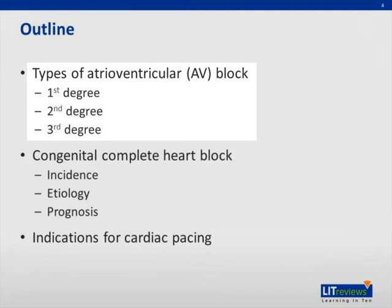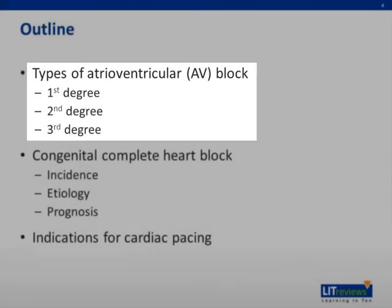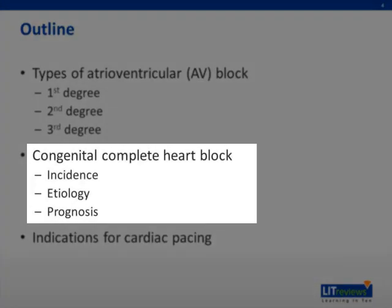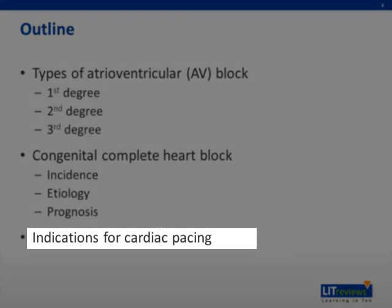This presentation will focus on the types of atrioventricular, or AV, block. I will go over each different type and show you examples with electrocardiograms. The different types are first-degree, second-degree, and third-degree AV block. I will discuss briefly the key aspects to remember about congenital complete heart block, focusing on the incidence, etiology, and prognosis. I will end with indications for cardiac pacing with a pacemaker as it pertains to patients with atrioventricular block.